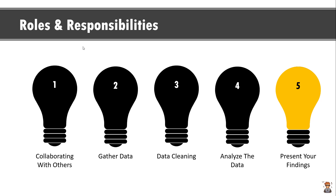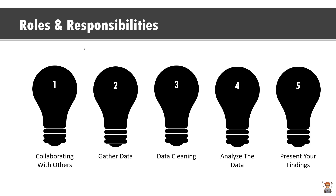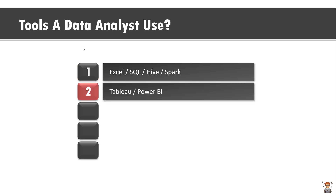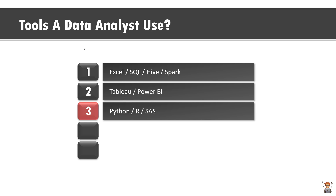So what tools do data analysts use? There are a variety of data sources and data can be saved in various formats like Excel, CSV files, or data coming from relational databases such as Microsoft SQL Server, or in big data environments where you use Hive and Spark to extract data. Tableau and Power BI are two data visualization tools, and a data analyst should know at least one of them to present findings to stakeholders. Data analysts should also know one programming language such as Python, R or SAS to manipulate data, build data visualizations like bar charts or line charts, connect all the dots, and present findings to stakeholders.